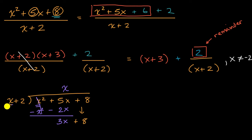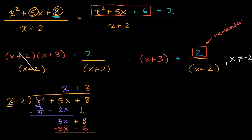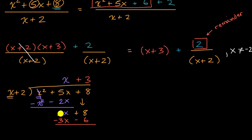Bring down that eight. Look at the highest degree term. And we get x goes into three x three times. Put that in the constant column or the zero degree column. So plus three. Three times two is six. Three times x is three x. Subtract these. And we're left with, those cancel out, and you're left with eight minus six, which is indeed equal to two.